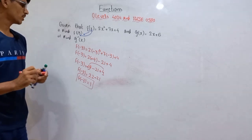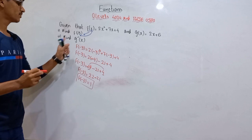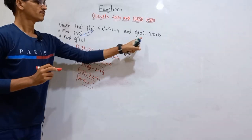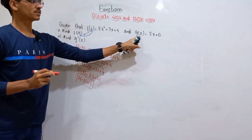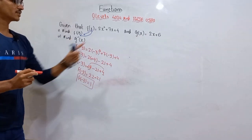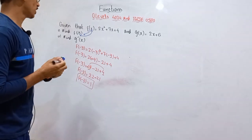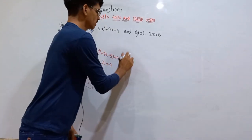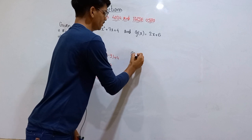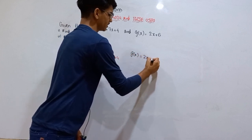This is how you can find out the value of any function. Now in this part we have to find out g inverse of x. g(x) = 2x + 6 and you just have to find the inverse of this function. There are a few steps to find the inverse of any function.